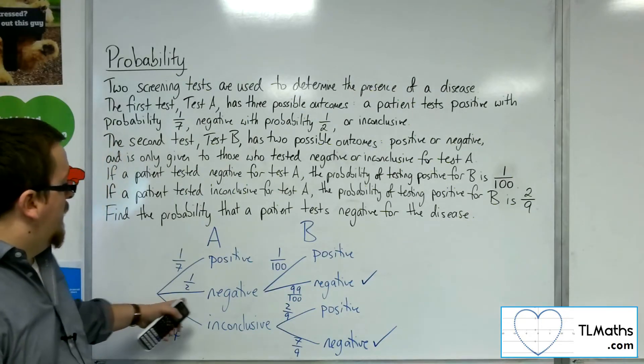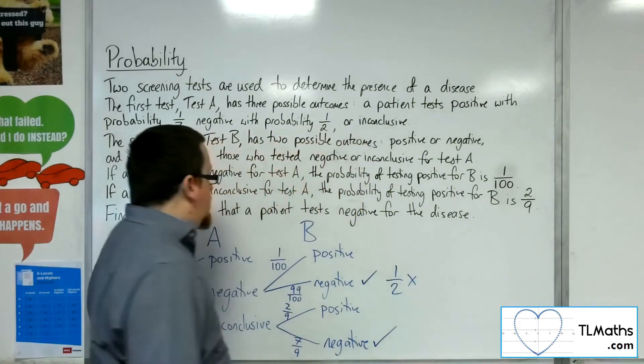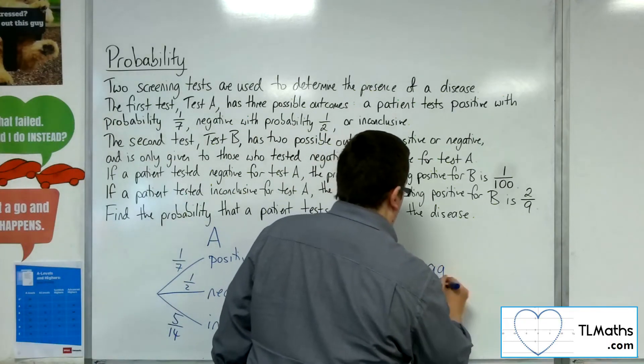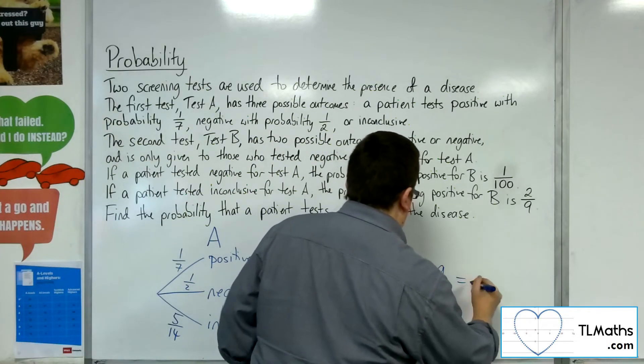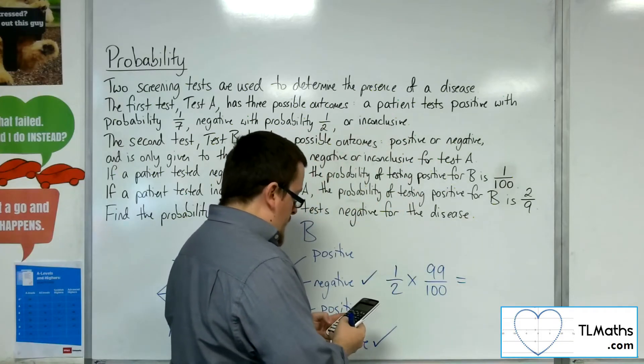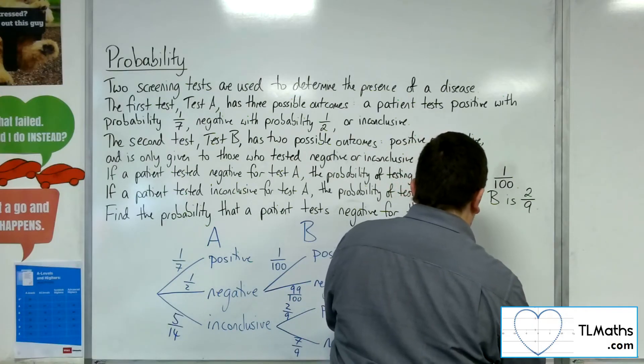So, either they tested negative initially. They were tested again, and they got ninety-nine over a hundred. Okay, so, ninety-nine over a hundred divided by two is ninety-nine over two-hundred, of course.